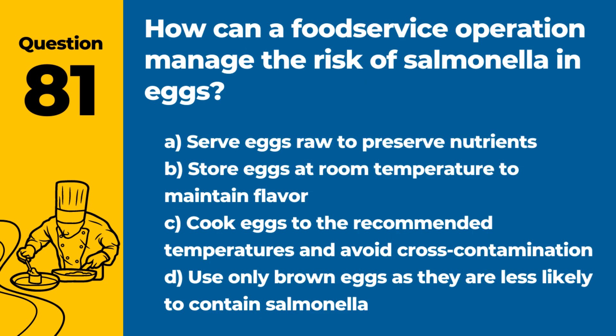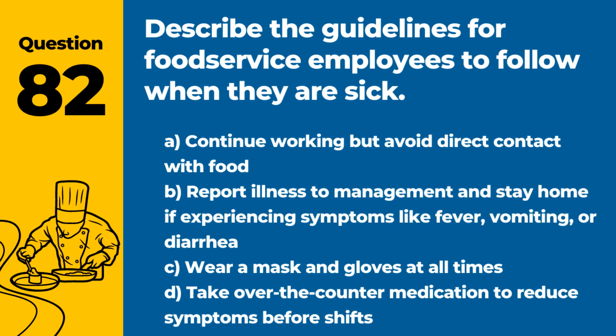Question 81. How can a food service operation manage the risk of salmonella in eggs? Answer: C. Cook eggs to the recommended temperatures and avoid cross-contamination. Proper cooking and handling practices are essential to minimize the risk of salmonella.